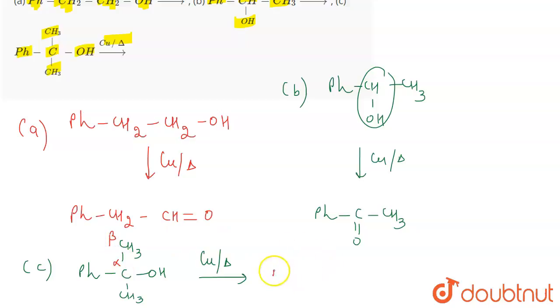Suppose this is your alpha and this is your beta. What is going to happen is the OH is going to be removed from alpha and hydrogen is going to be removed from the beta. So this will become phenyl C double bond CH2, and this will be CH3. So these are the products formed in reactions A, B, and C.